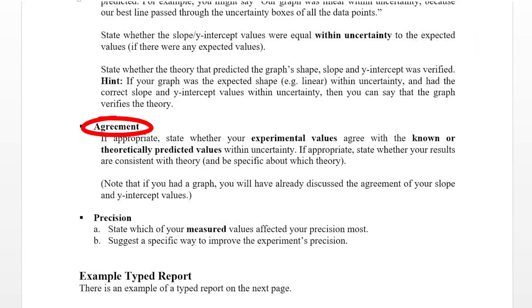So you'd have four different statements here where you'd say this experimental value did agree within its limits of uncertainty with the measured value, this next one did not agree within its limits of uncertainty, and so on. So the agreement section is simply stating whether your values agreed with the predicted values within their limits of uncertainty.